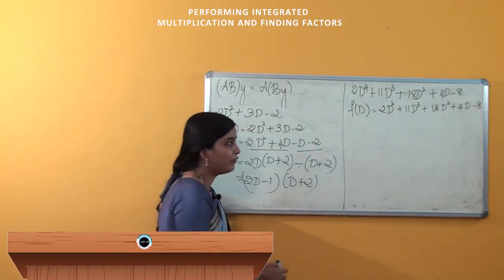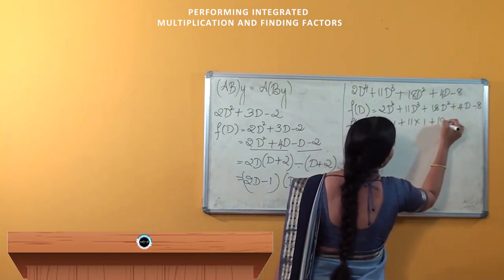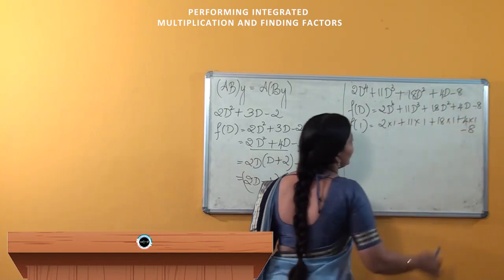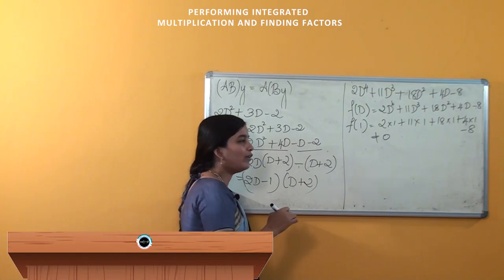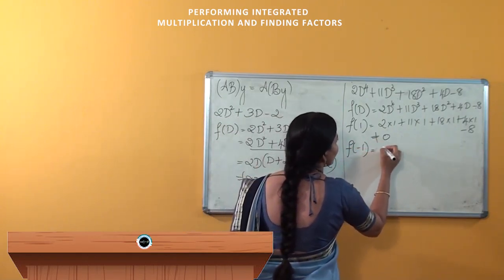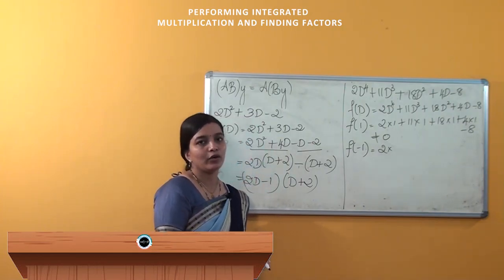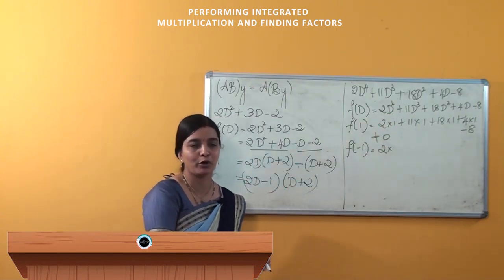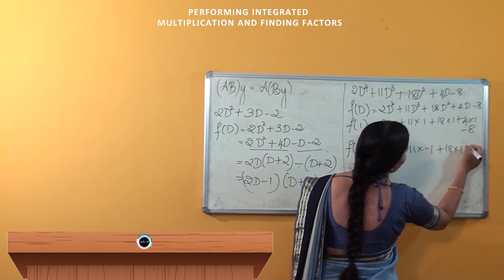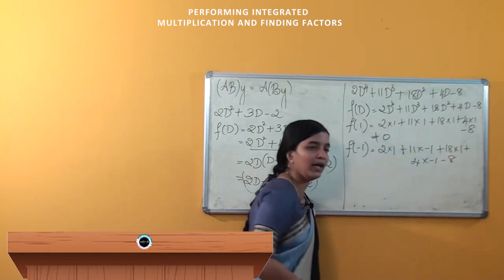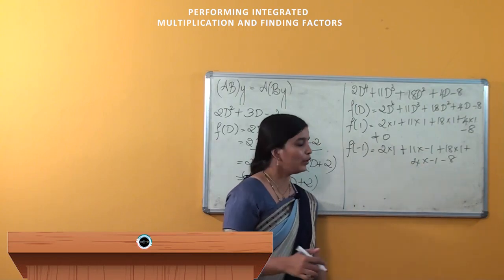If we substitute D = 1, f(1) = 2 + 11 + 18 + 4 − 8, which is not equal to 0, so 1 is not a root. If we substitute D = −1, note that odd powers give negative values and even powers give positive values. So f(−1) = 2 − 11 + 18 − 4 − 8, which is also not equal to 0.